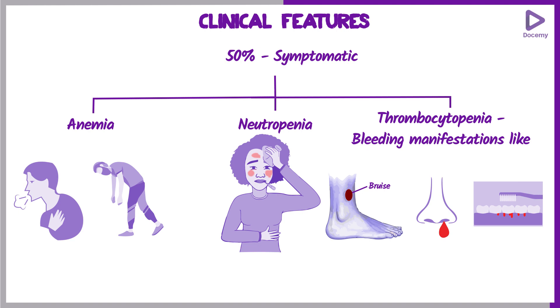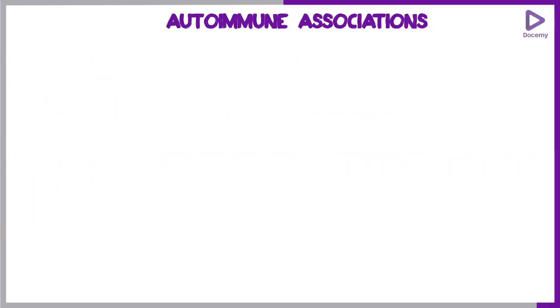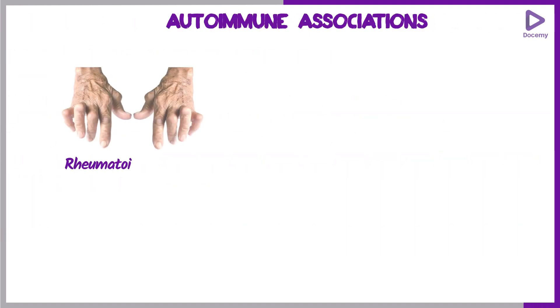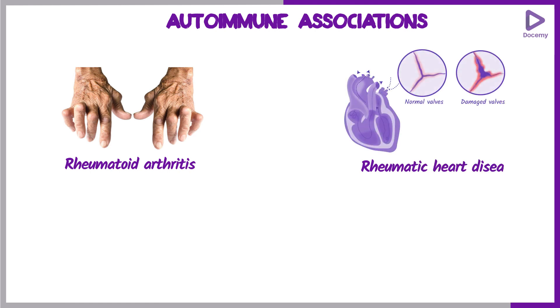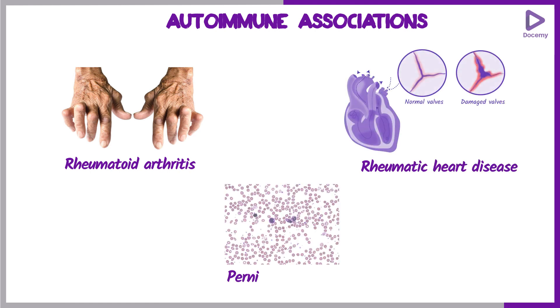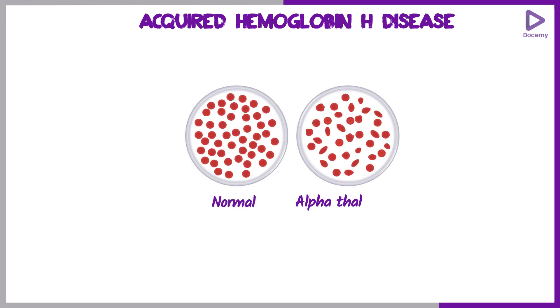Rarely, patients can have autoimmune associations like rheumatoid arthritis, rheumatic heart disease, or pernicious anemia. Certain rare conditions such as acquired hemoglobin H disease, which is an alpha-thalassemia-like presentation, can also be seen.